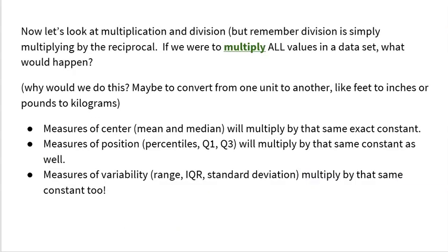What happens when you multiply or divide all of your data by the same constant? Well, why would we do this? First off, maybe we're converting, like we're going to convert feet to inches. If you're going to convert feet to inches, you have to multiply all of your feet by 12 to convert it to inches. Or maybe you're going to go from pounds to kilograms and so forth. To do that, you got to multiply. So how does multiplication affect your data? Well, simple. It affects everything.